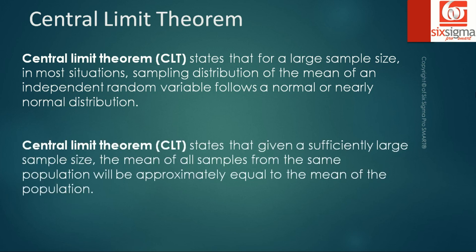The second part of central limit theorem states that given a sufficiently large sample size, the means of all samples from the same population will be approximately equal to the mean of the population. We saw this as well—the population mean was 2.51 and the mean of all the samples that we took was 2.52, so the means also tend to overlap. So the central limit theorem here states these two important properties.